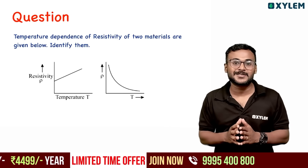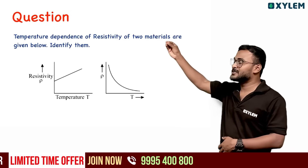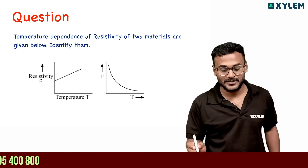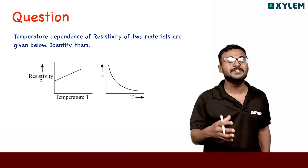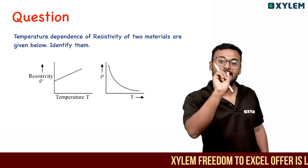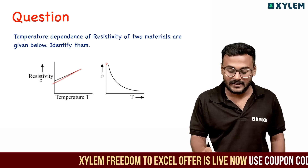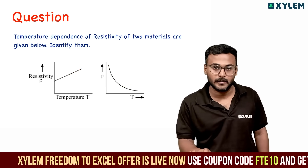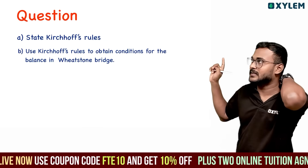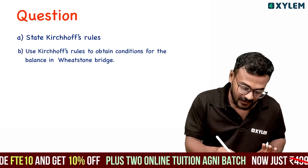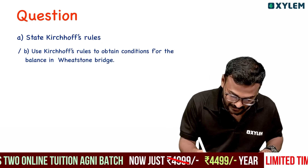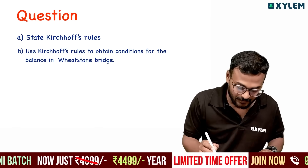Next one: Current Electricity. If you have a graph with temperature, we can identify the same type of materials. Almost independent resistance is there. A lot of semiconductors are inversely proportional. State Kirchhoff's rules — that's why Kirchhoff's rules are the rules. We'll balance it.